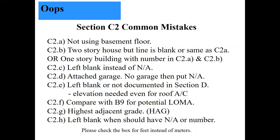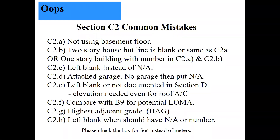C2E asks for the lowest elevation of machinery and equipment — for example, a heat pump on the northwest corner of the house on a slab. Write in the comments section 'heat pump, northwest corner, on a slab' and give the elevation for the top of that slab in C2E. A common mistake involves large commercial buildings with utilities on top of the roof — surveyors sometimes don't get on a ladder to measure them. You have to go up and measure the rooftop air conditioning unit and document its elevation.